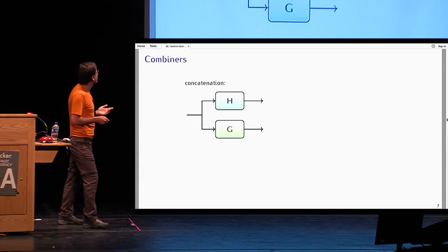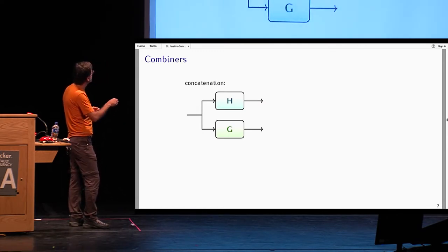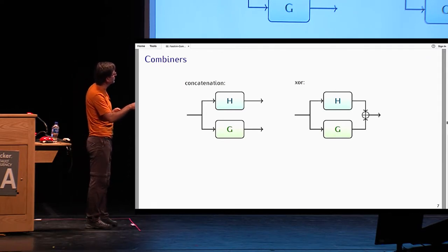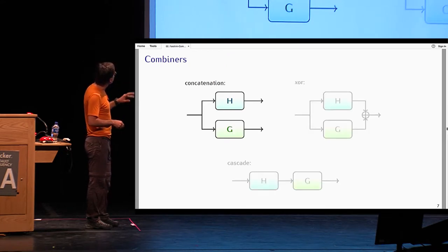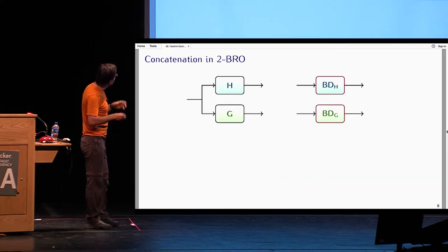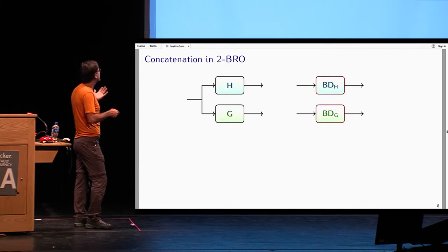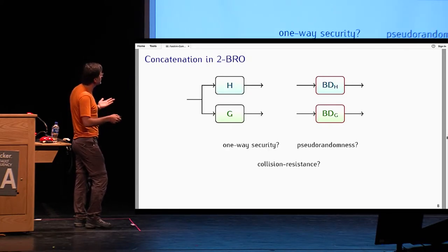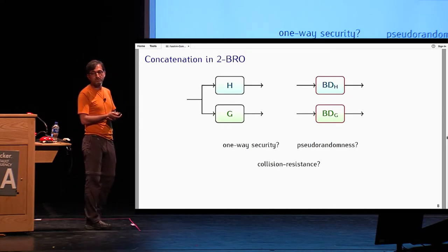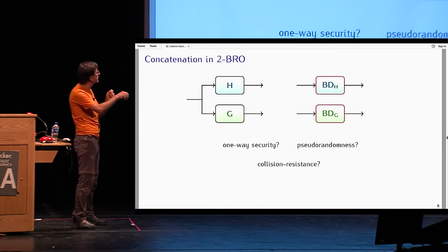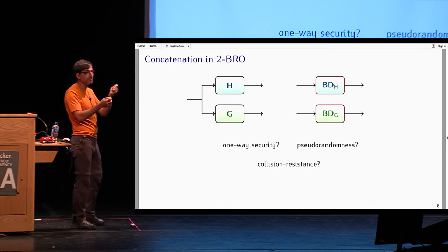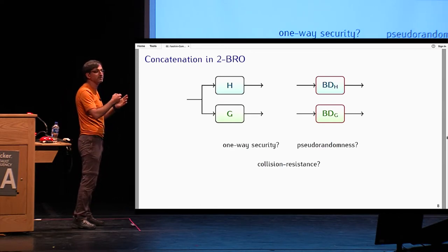There are a number of ways to combine hash functions. We have the concatenation combiner which takes an input and outputs the concatenation of hash of x and g of x. We have the XOR combiner which outputs the XOR of hash of x and g of x if they are of the same length. We also have cascade where you sequentially compose the hash functions. Let's focus on the concatenation combiner. The question is whether this concatenation combiner is one-way or pseudorandom or collision-resistant in the presence of these two backdoor oracles.